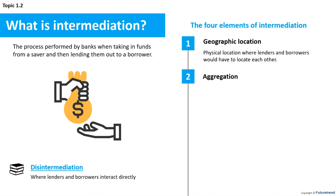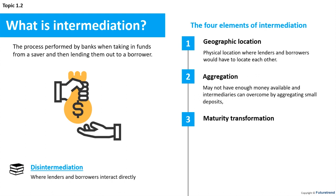Aggregation: not every potential depositor may have enough money available to satisfy the borrower's requirements. Intermediaries can overcome this size difference by aggregating small deposits. Maturity transformation: a borrower may need funds for a longer period of time than the lender is prepared to agree to. Intermediaries are able to overcome this mismatch by offering a wide range of deposit accounts to a wide range of depositors.